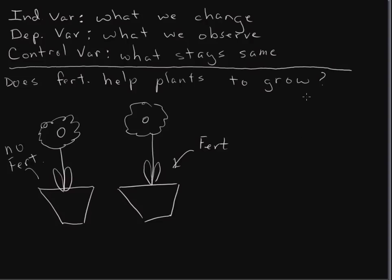Okay, so for the first of our variables, what did we change? The thing that we changed, well, we added fertilizer. So that fertilizer is going to be our independent variable, that's the thing that we changed. And the thing that we're testing, we want to see if fertilizer helps.